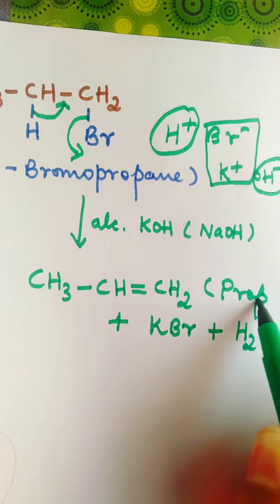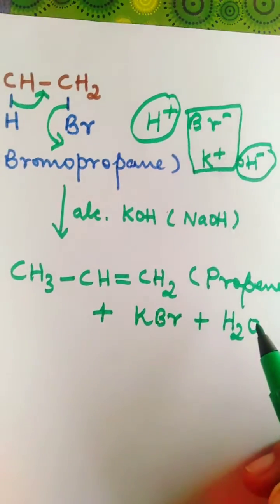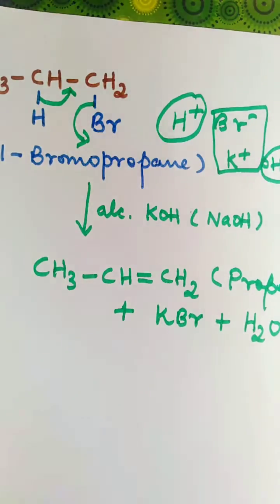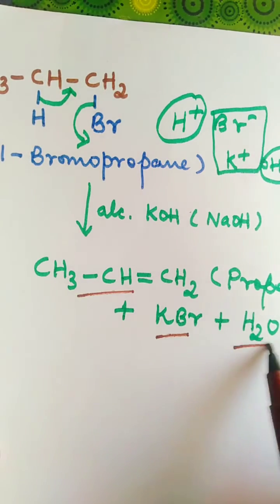We get propene. So, what are the products? Propene, potassium bromide, and H2O.